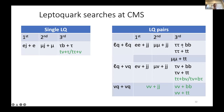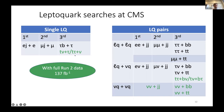At CMS, we have searches for first-, second-, and third-generation leptoquarks in both single and pair production. The green highlights results done with the full Run 2 data. For first-generation leptoquarks, in pair production we look for one or two high-pT electrons with or without missing energy, and high-momentum jets with no flavor requirements.